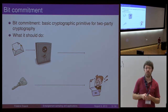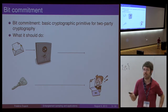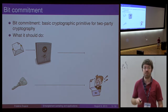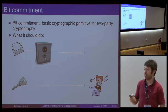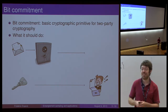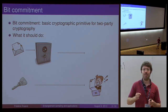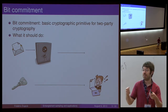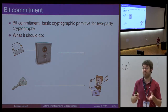So what is bit commitment? It's a basic cryptographic primitive with which you can do all sorts of very strong tasks. You can do basically arbitrary two-party computation if you're able to do this, for example in the quantum world. It's basically implementing a digital version of that picture I have up there — it's a two-phase protocol with a commit phase and then a reveal phase.